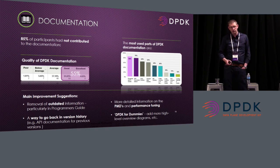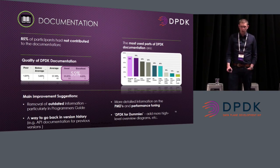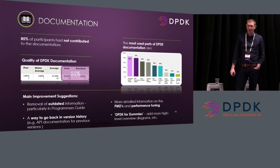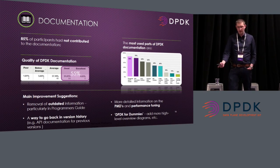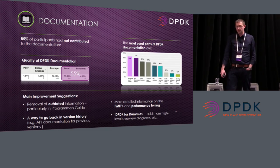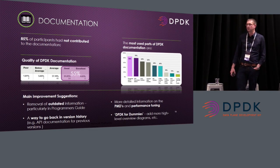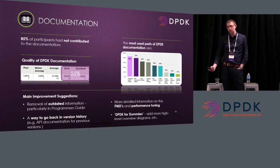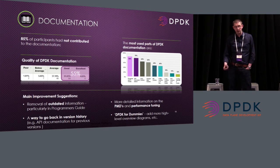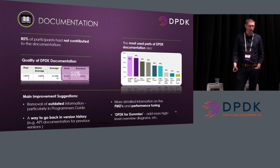The main documentation improvement suggestions were: one, removal of outdated information, particularly from the programmer's guide; two, a way to go back in version history, such as API documentation for previous versions; three, more detailed information on the PMDs and performance tuning; and four, a DPDK for dummies guide. As new people join the community, there was a desire for more high-level overview diagrams to explain DPDK and give people context of what it does.